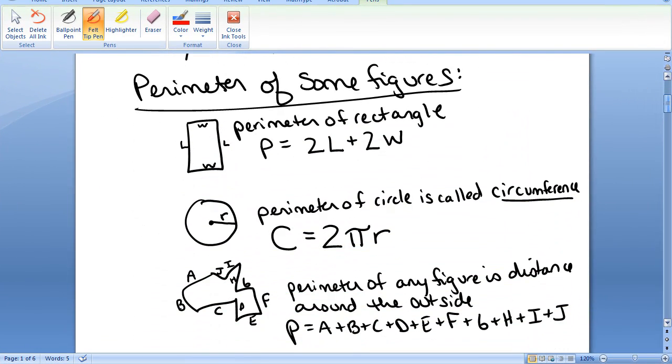Some formulas you should definitely know. Perimeter of a rectangle: to walk around the outside of a rectangle, you would walk the width, the length, the width again, the length again. So the perimeter of a rectangle P is 2 times the length plus 2 times the width.